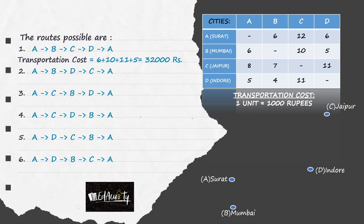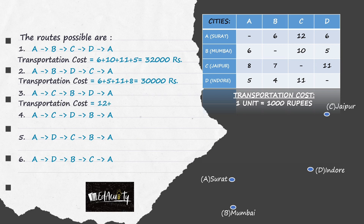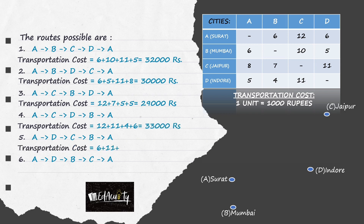You can pause the video here and carefully check the other possible routes as well. The costs corresponding to the second route is Rs 30,000, to the third route Rs 29,000, to the fourth route it's Rs 33,000, to the fifth route Rs 30,000, and to the sixth route it's Rs 28,000.